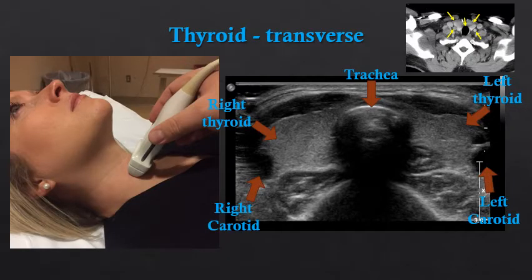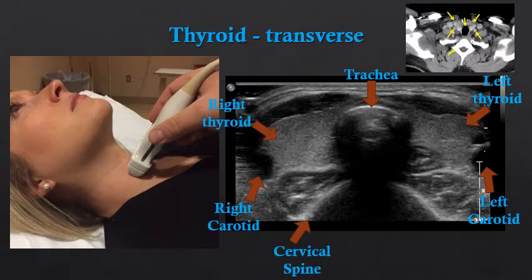To the outer margins of the lobes of the thyroid we see the right and left carotid arteries. We can also see deep to the trachea a portion of the cervical spine. As we've seen in other bones, the cervical spine is represented by a thick hyperechoic line with posterior acoustic shadowing.